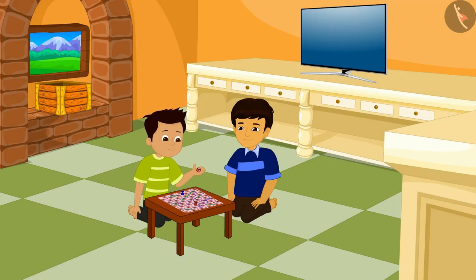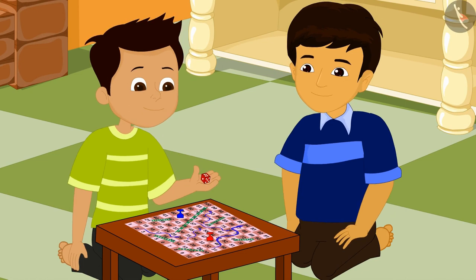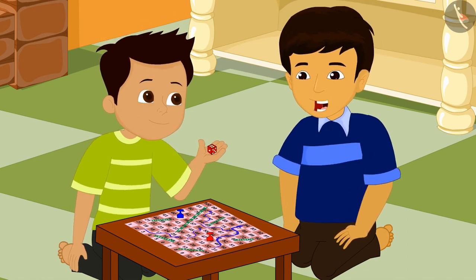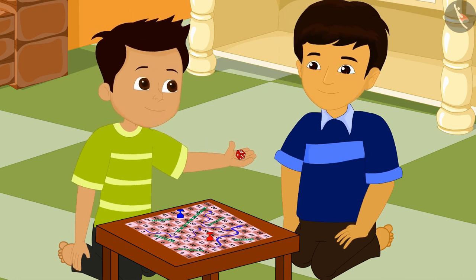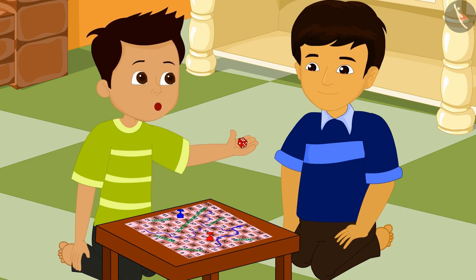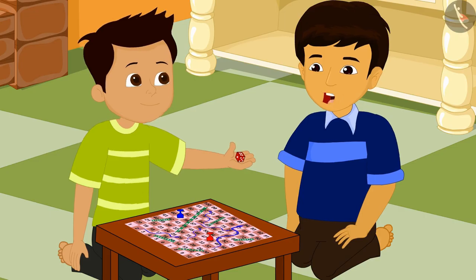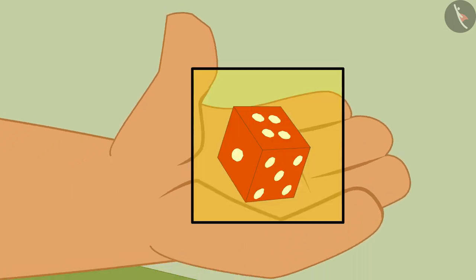Manas and Thomas are playing a game of snakes and ladders. Thomas, it's your turn. Why are you taking so long? Throw the dice quickly. Wait Manas, did you notice that this dice is not cuboid in shape? Yes Thomas, all the faces of this dice are square. So the shape of this dice is that of a cube.